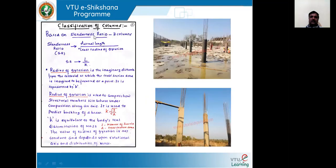Coming to the classification of columns, columns exist in different forms and shapes according to cross section. As per the syllabus, we are considering the important types. There are two main sketches: a short column where the height is very small compared to the diameter, and a long column where the length is larger compared to the lateral dimension. Based on the slenderness ratio, we can classify columns into three types: long columns, short columns, and medium columns.